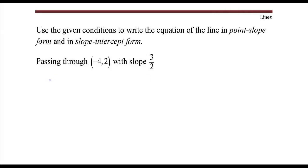I'm going to write the equation in point-slope form, which is y minus y1 equals slope times x minus x1. This is pretty simple. Just identify this point as x1, y1.